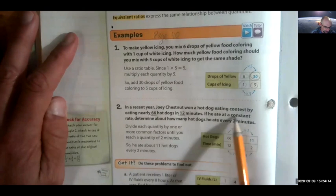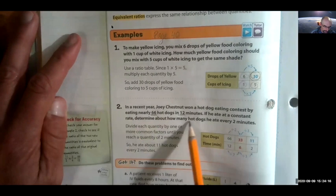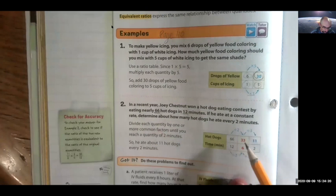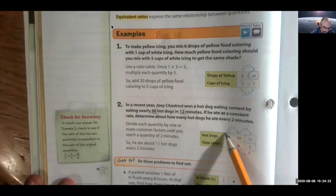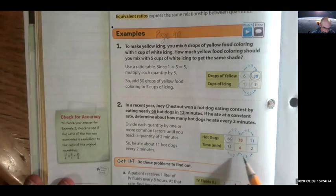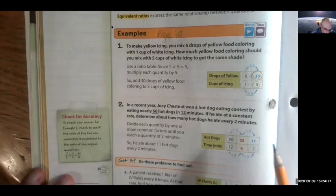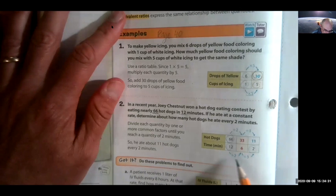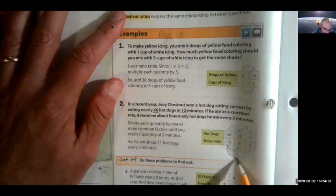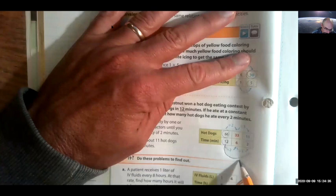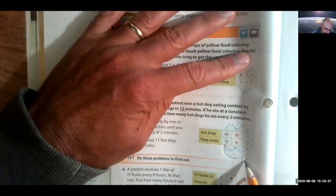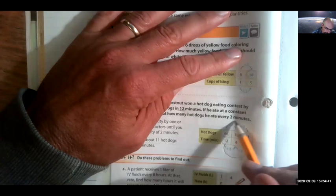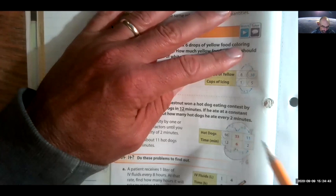If he ate at a constant rate, determine how many hot dogs he ate every two minutes. So here's what they give us, right? We know that he ate 66 in 12 minutes, and we want to figure out what is it going to be in two minutes. So they're saying you can divide by two and then divide by three. Or you could just say 12 divided by six is two. So 66 divided by six is 11. Got it? So that works that way too.